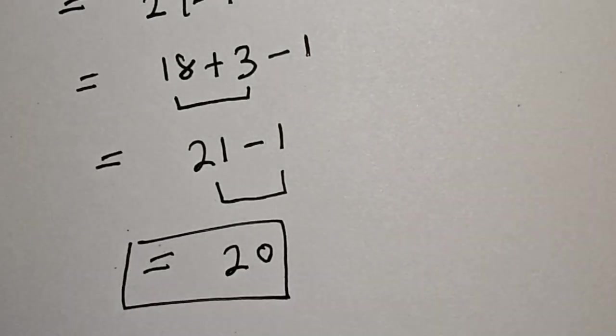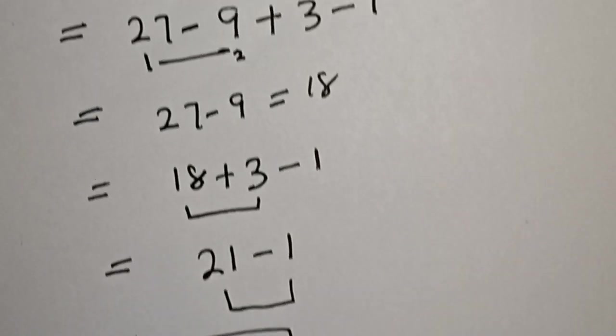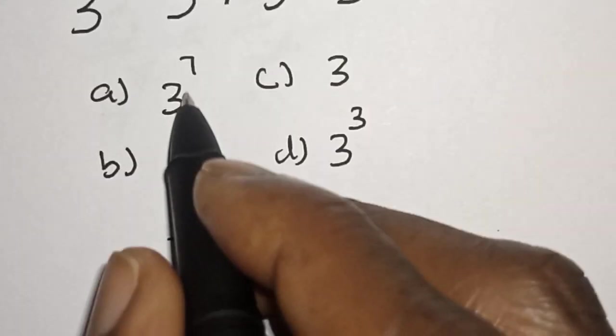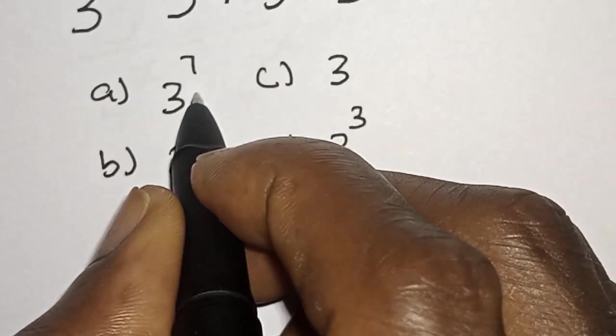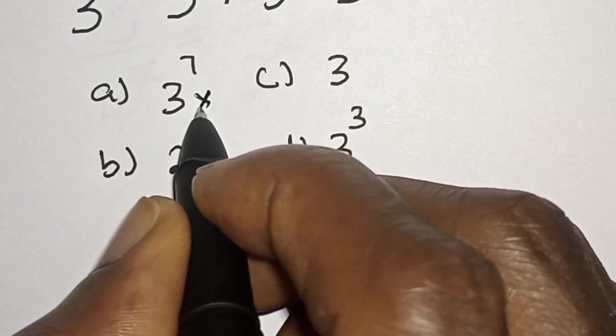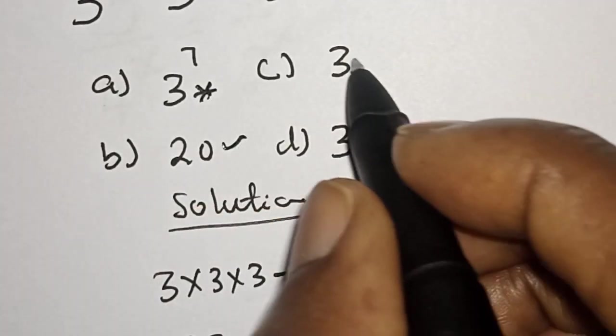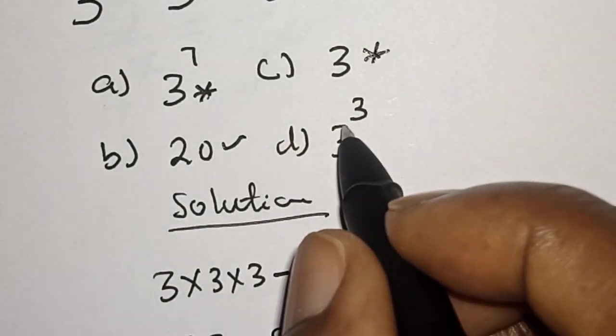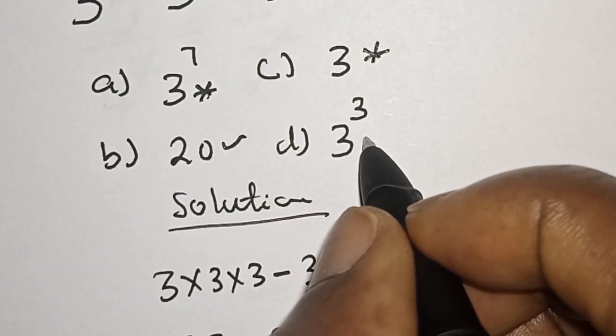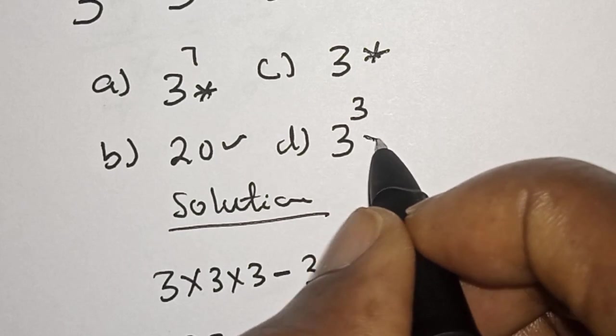Let's check our option to know the correct one. Then we have option A is 3 raised to power 7. This is wrong. Option B is 20. Then this is correct. C is 3. This is wrong. And D is 3 raised to power 3. And that is 27. This is wrong.